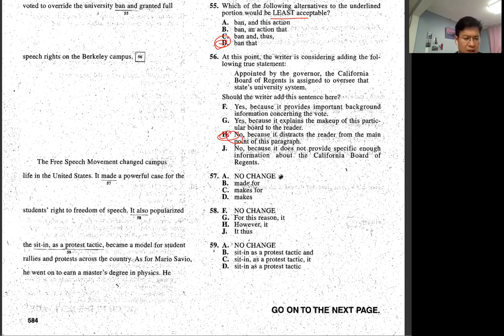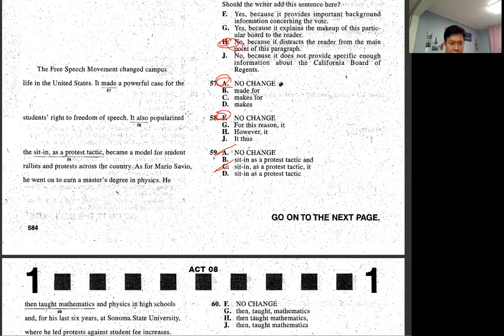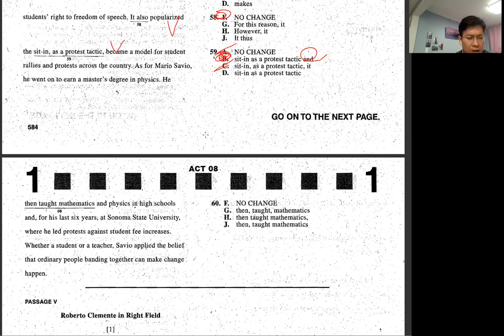First speech movement changed campus life in the United States. It made a powerful for the students, right? Yeah, there's nothing wrong with this. Students by freedom of speech. It also popularized. Popularized. It also popularized. And then popularized the sit-in as. Sitting as. Sitting. So you shouldn't put comma, we cannot pause sitting as. Sitting a protest tactic, as a one thing that you know whatever they're talking about. So popularized and then became. So these two verbs you have to put something in the middle which is to connect those two, which is. He.